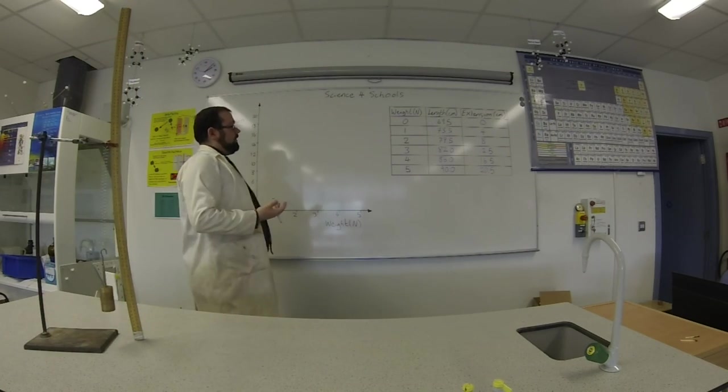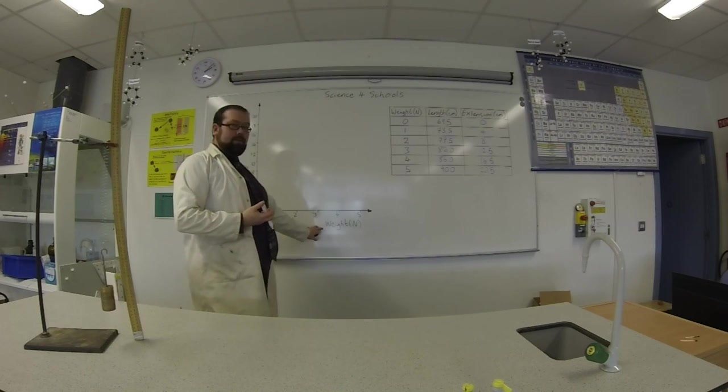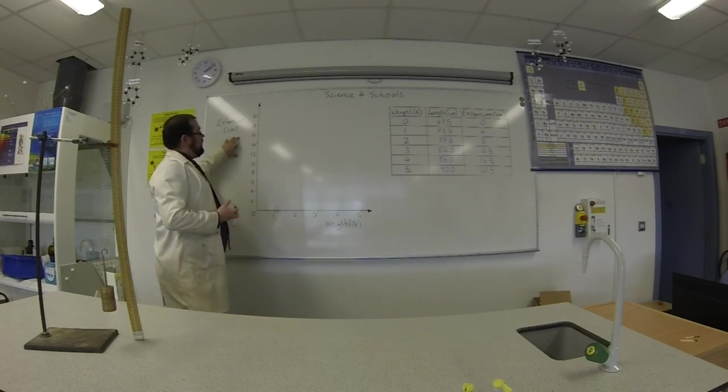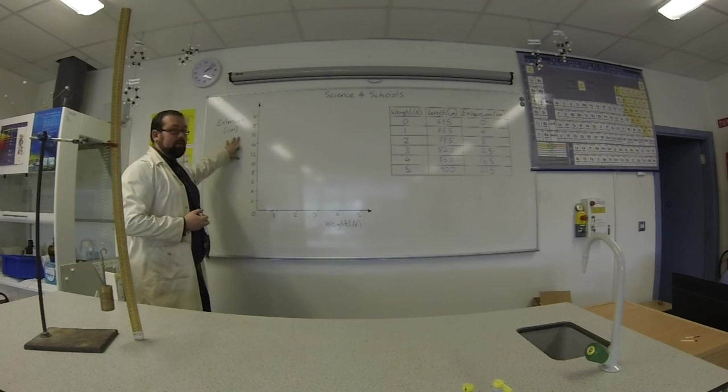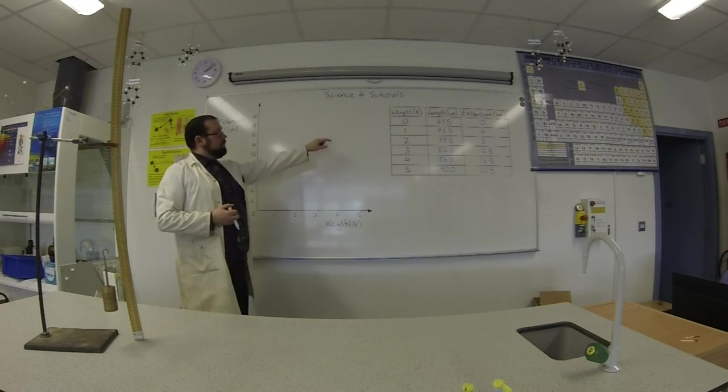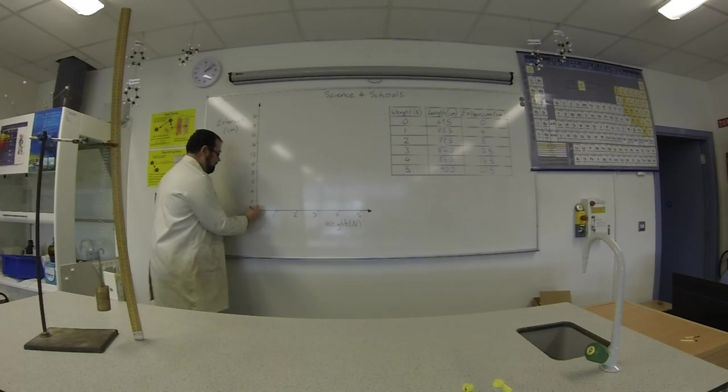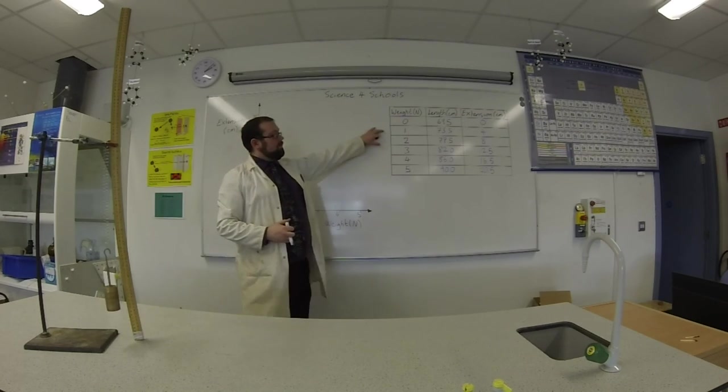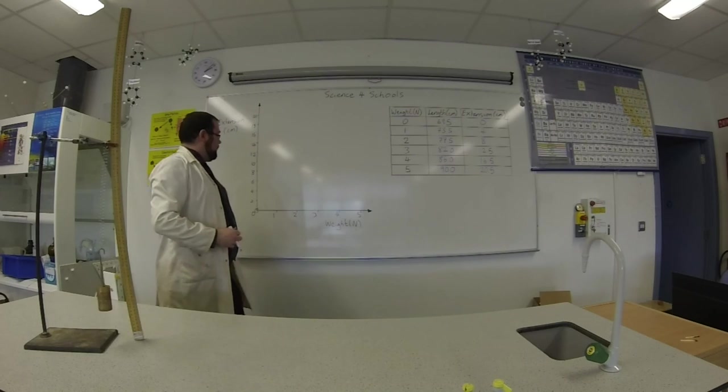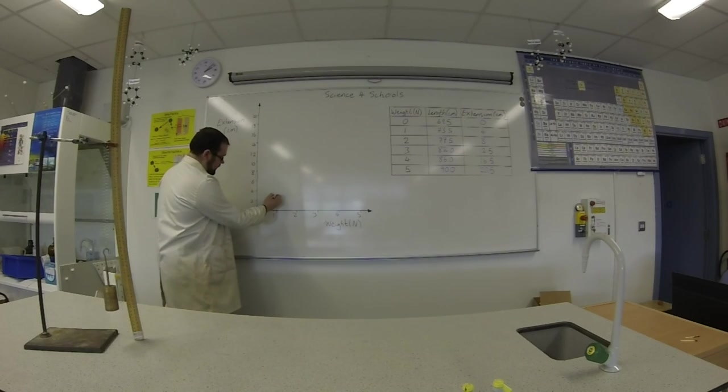I'm going to plot each of these on a graph. See, I have weight on my x-axis, and I have the extension on my y-axis. So if my weight is zero, the extension is zero, so I have a point right here. If I have one newton, the extension is four centimeters, so I have one point there.